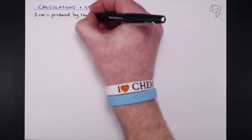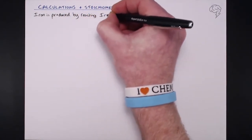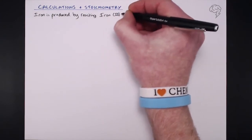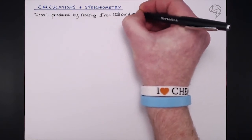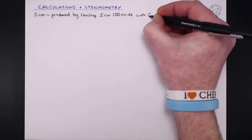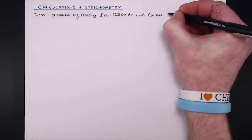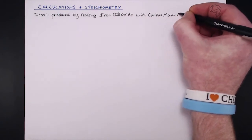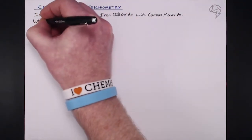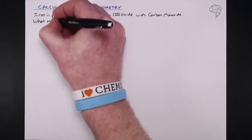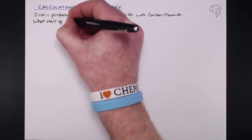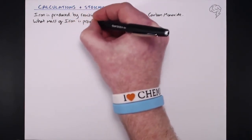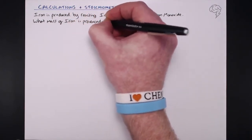The first question is: iron is produced by reacting iron oxide with carbon monoxide. What mass of iron is produced from one kilogram of iron oxide?